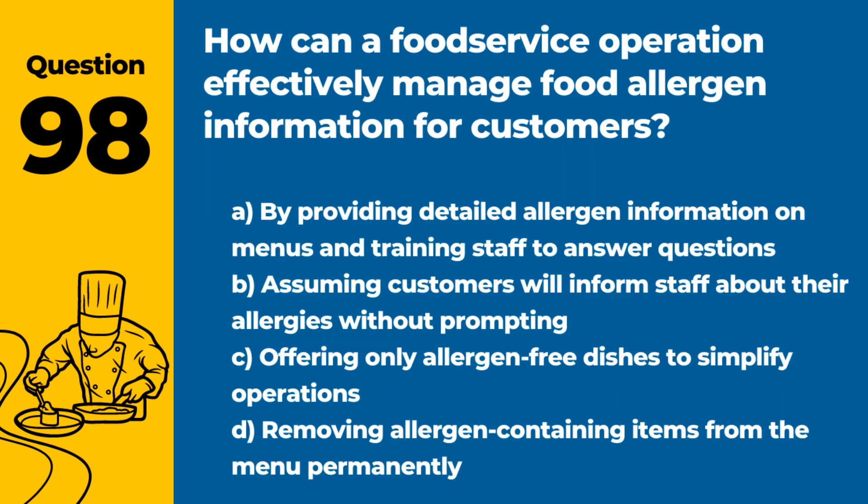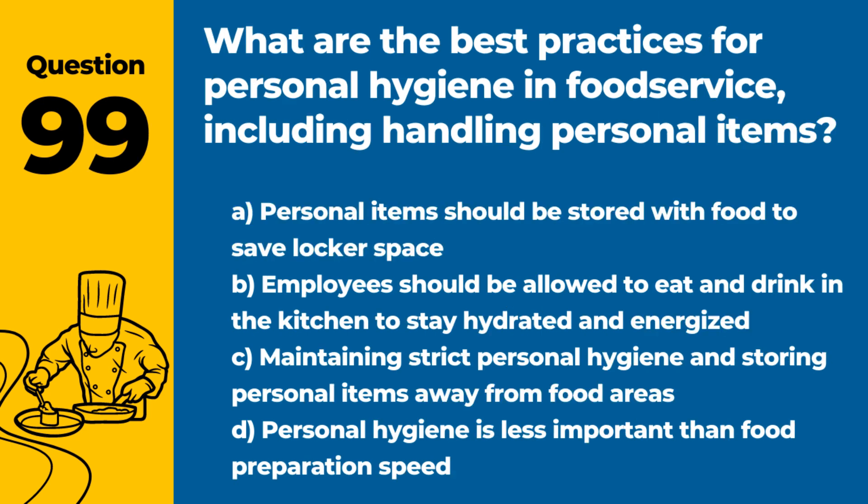Question 98. How can a food service operation effectively manage food allergen information for customers? Answer: A. By providing detailed allergen information on menus and training staff to answer questions. Transparency and knowledge enable customers to make safe choices and reduce the risk of allergic reactions.